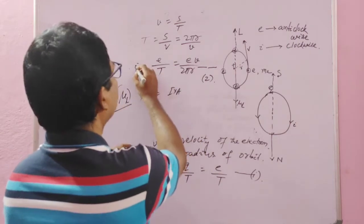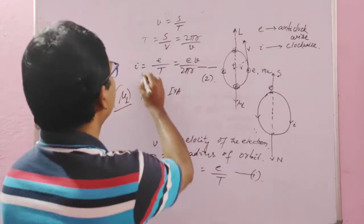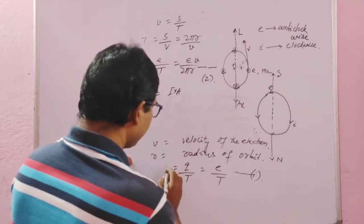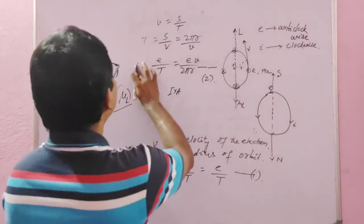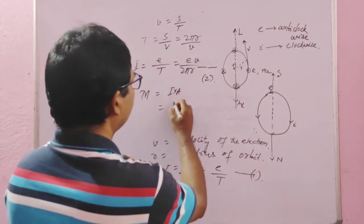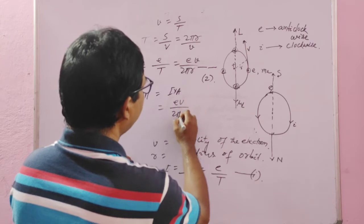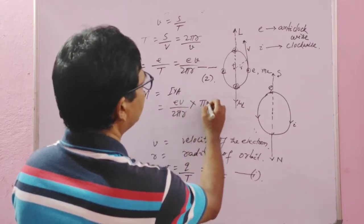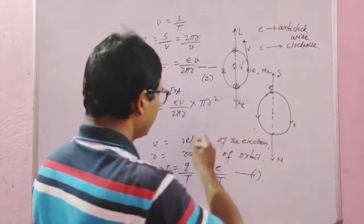So we write M = I × A. Here I = ev/2πr and A = area of the circular loop = πr². Substituting: M = (ev/2πr) × πr². The π and r cancel, giving M = evr/2. This is equation 3.